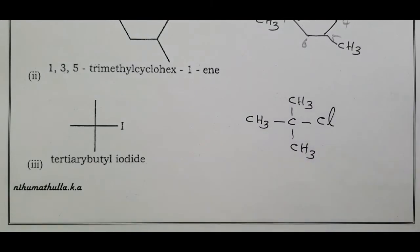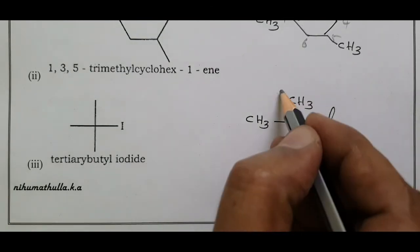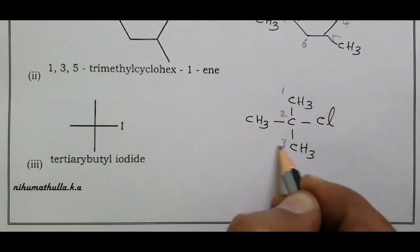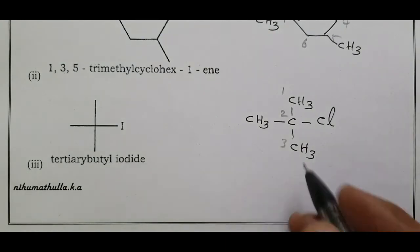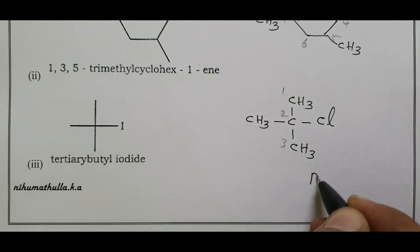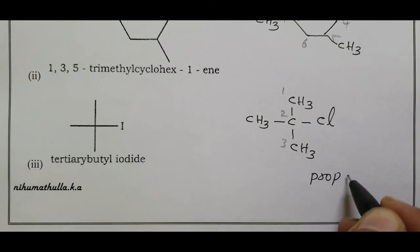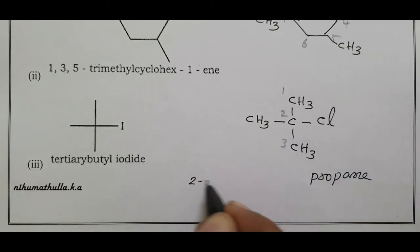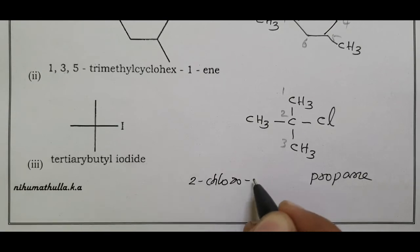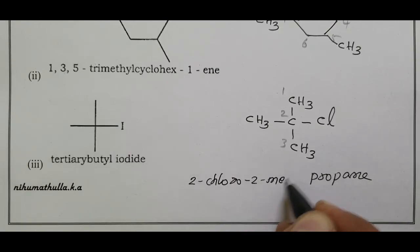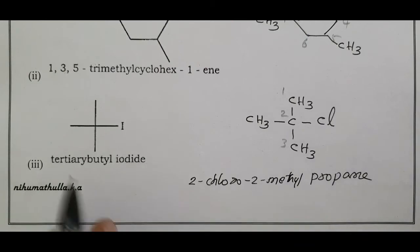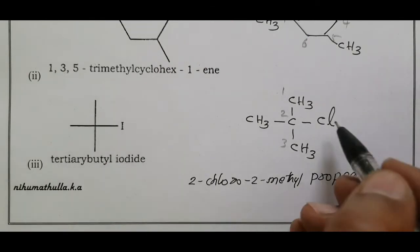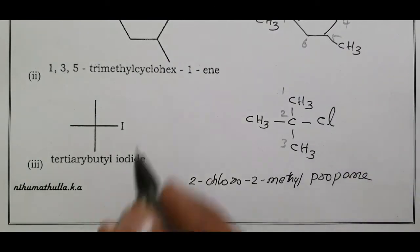Adding one chlorine to this structure: carbon one, two, three — three-carbon propane chain. The second carbon has the chlorine attached. That gives us 2-chloro-2-methylpropane, which is the IUPAC name for tertiary butyl chloride (iodide).